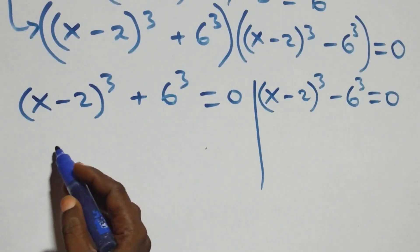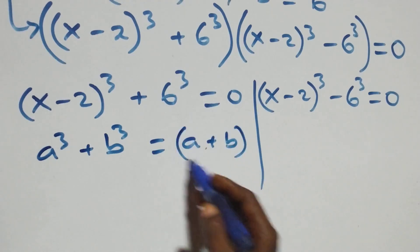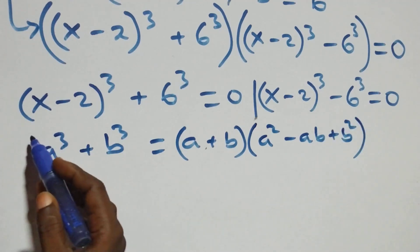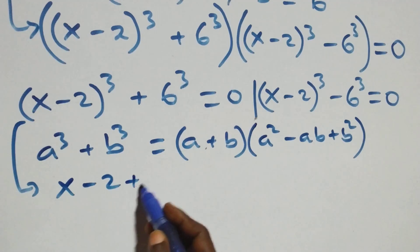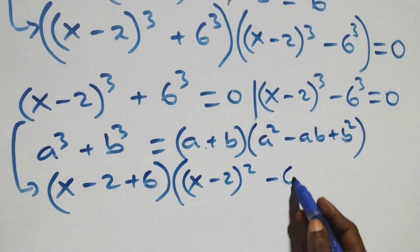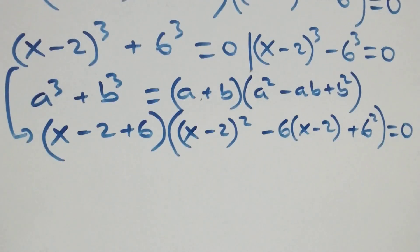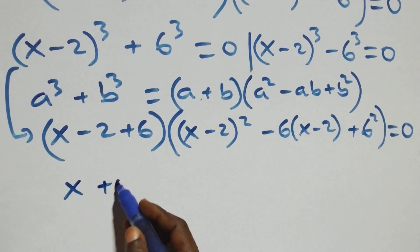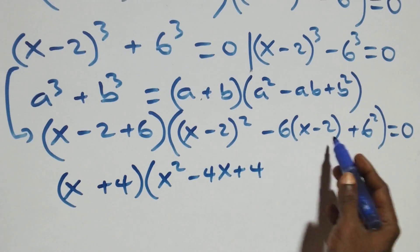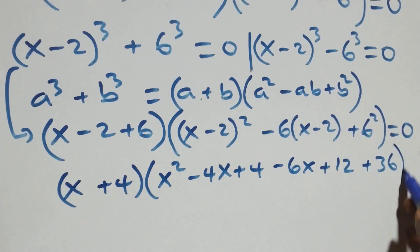Solving case 1: this is the same as a cubed plus b cubed, which equals a plus b in brackets, times a squared minus ab plus b squared. This becomes x minus 2 plus 6, in brackets, times x minus 2 squared minus 6 times x minus 2 plus 6 squared, in brackets, equals to 0. Expanding: x minus 2 squared gives x squared minus 4x plus 4, minus 6 times x minus 2 gives minus 6x plus 12, then plus 6 squared which is 36, equals to 0.